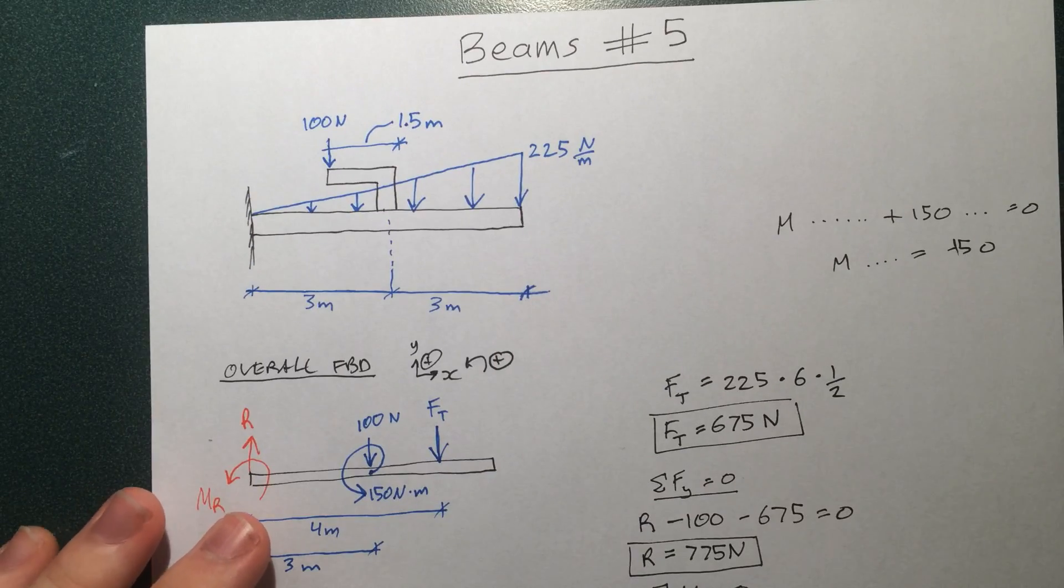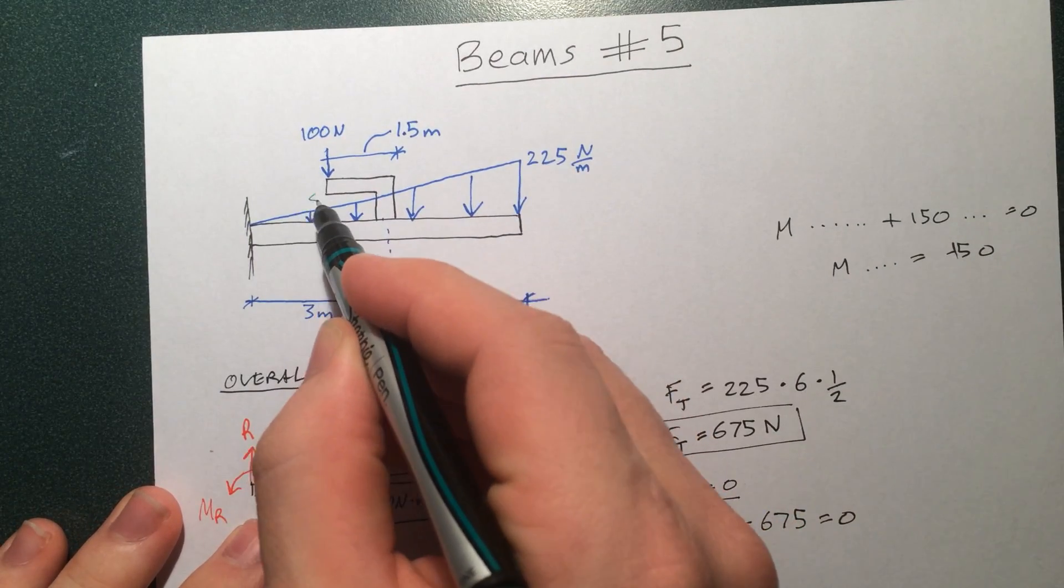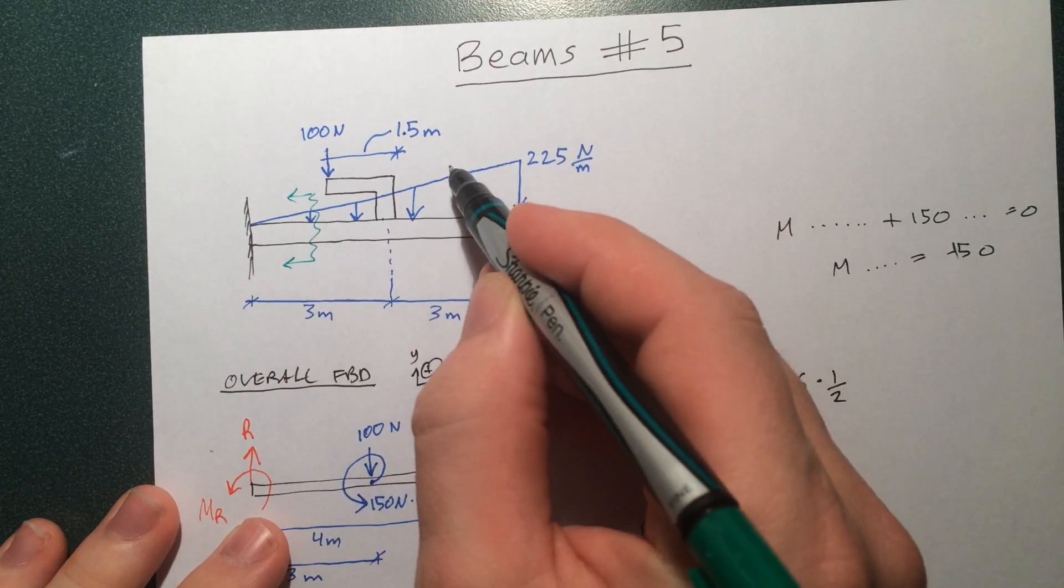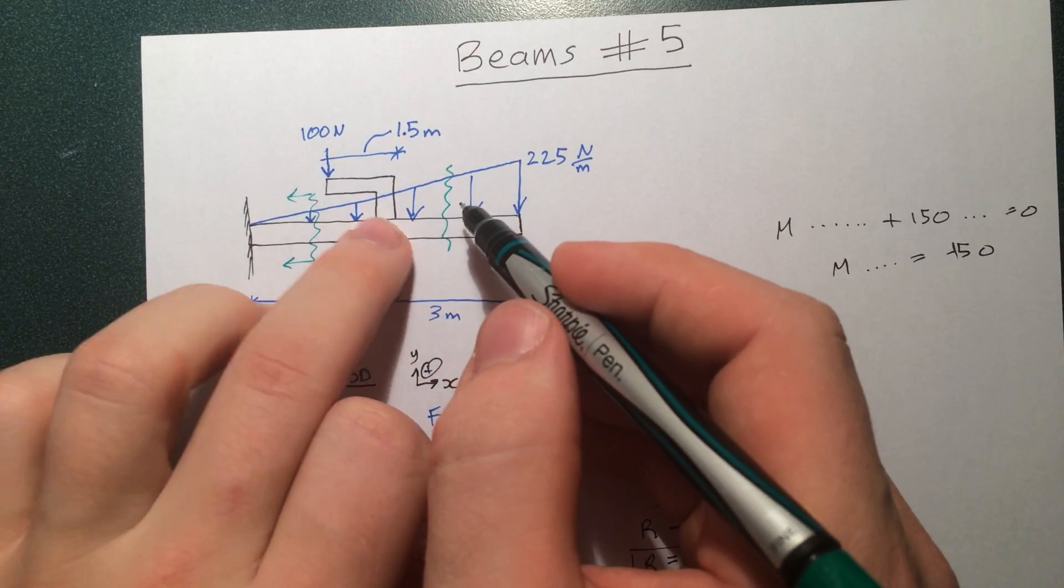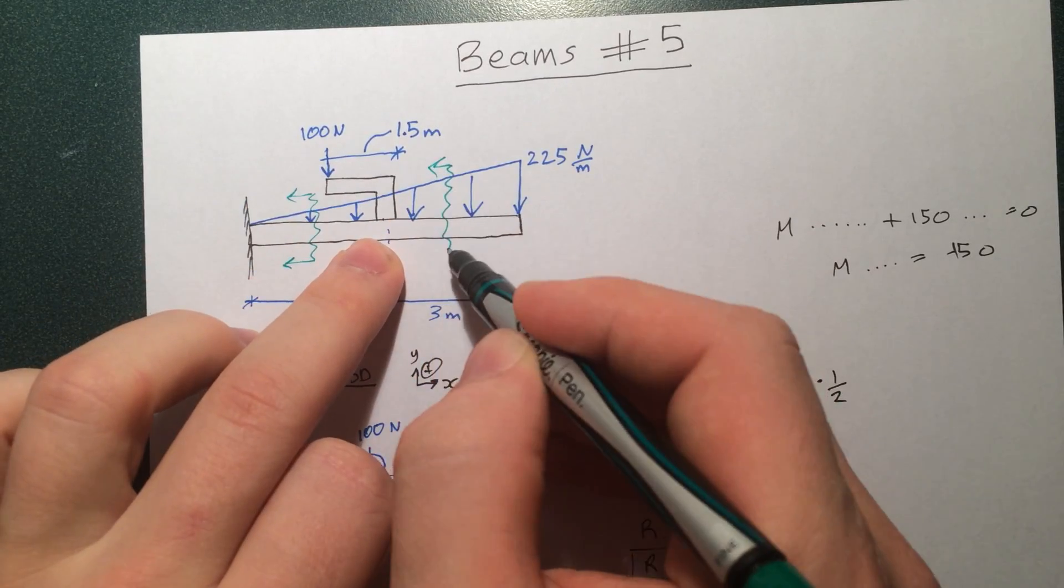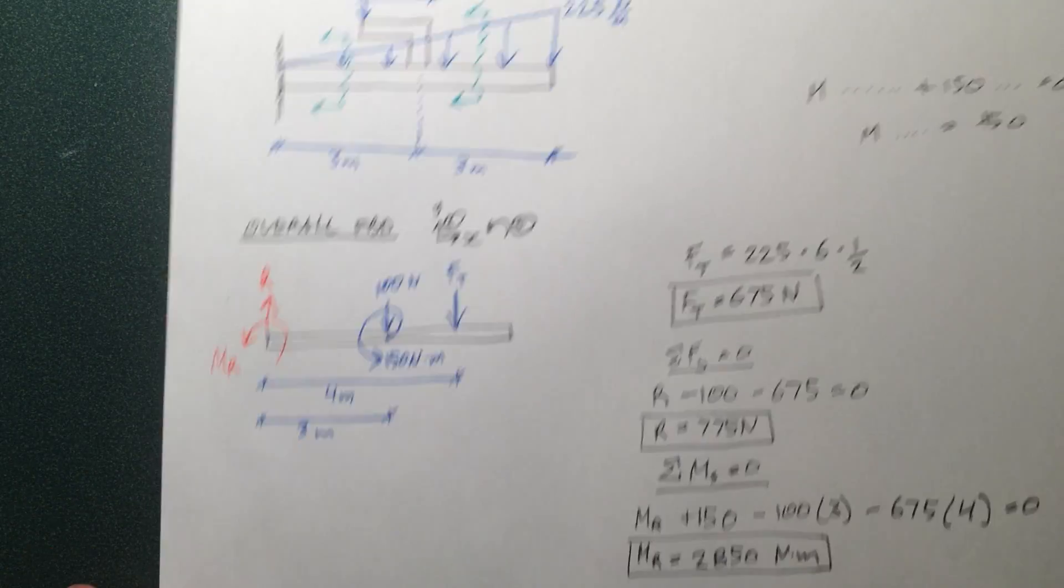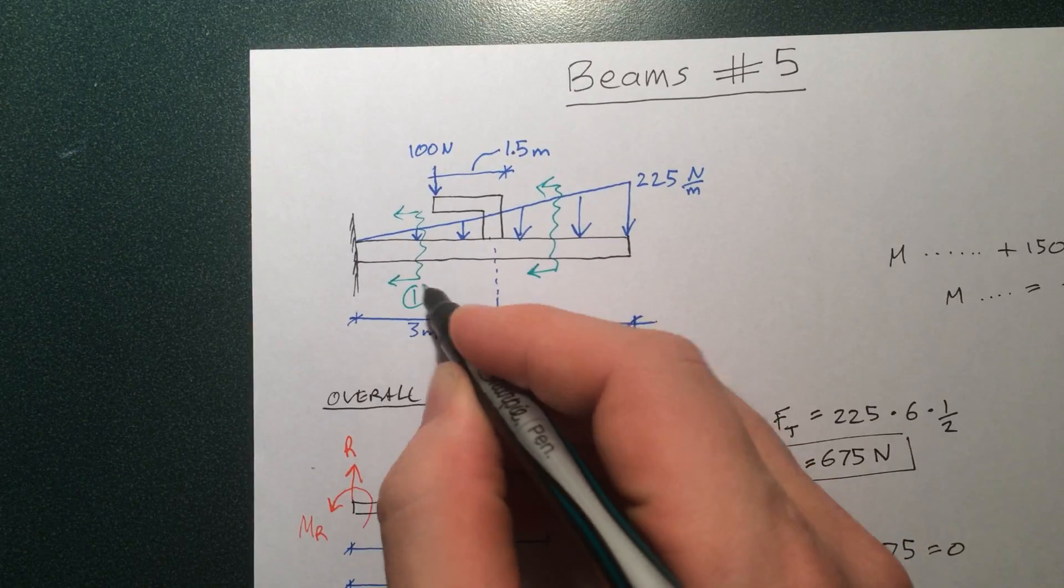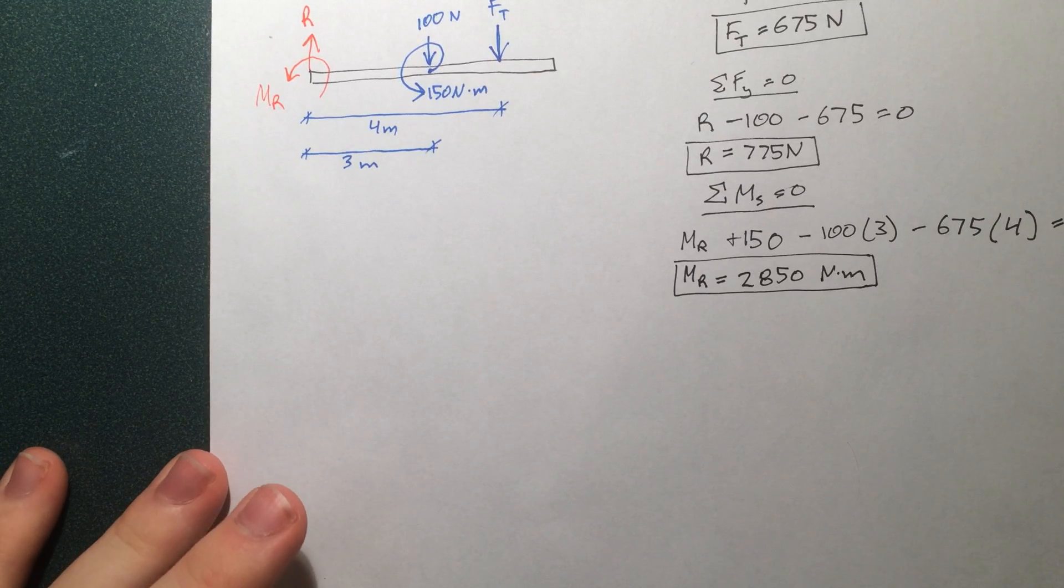So we'll start with cuts. So we can describe this piece here as one cut. And then, of course, after we added the force in the moment, this is another section here. So let's just call this one, two, and get going on that.